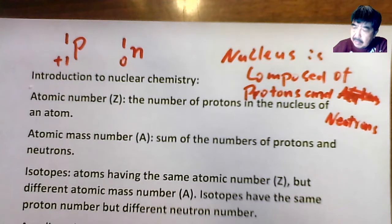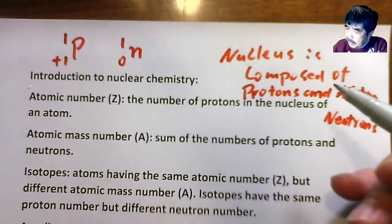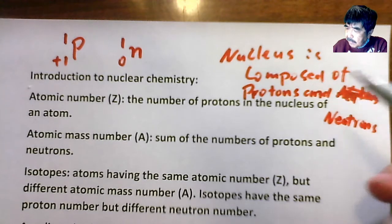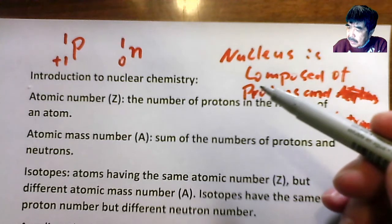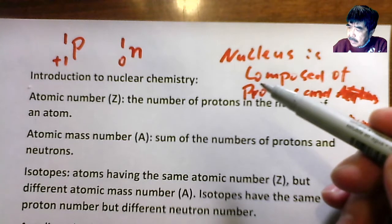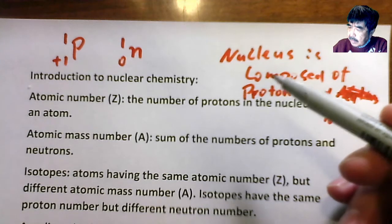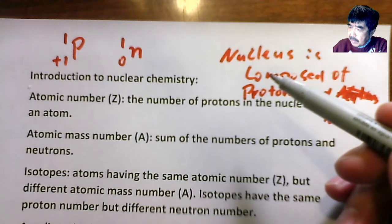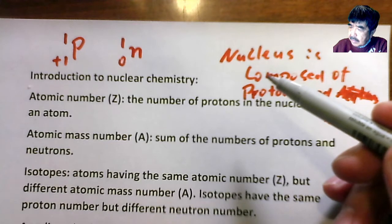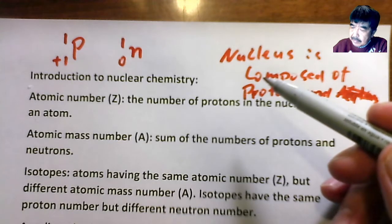Let's take a look at the nuclear reaction. Nuclear reaction is different from a chemical reaction. Basically, a chemical reaction involves electron transfer or sharing. A nuclear reaction involves the particles in the nucleus, or particles or energy change in the nucleus.